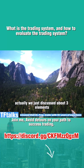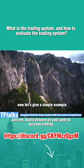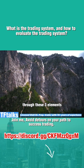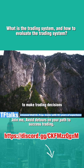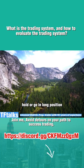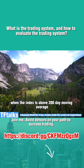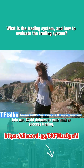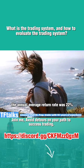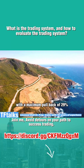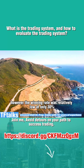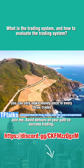We just discussed three elements for evaluating a trading system. Now let's give a simple example to see whether it's a good trading system or not. Many people like to use moving averages to make trading decisions, so I will describe a trading system based on the 200-day moving average. It works like this: hold or go long when the index is above the 200-day moving average, and exit all your positions when it's below the 200-day moving average. Until June 2018, the annual average return rate was 22%, with a maximum drawdown of 29%. However, the winning rate was relatively low at only 30%, meaning you can only make money once in every three trades.